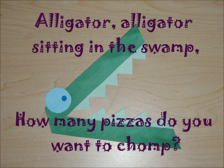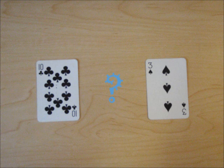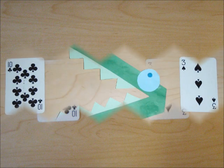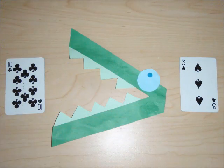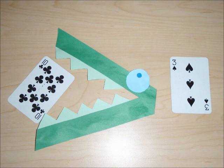Alligator, alligator sitting in the swamp, how many pizzas do you want to chomp? Ten or three? Hmm, I'm a very very hungry alligator, so I'll eat whichever one is greater. Ten is greater than three. Three is less than ten. I'll eat ten.